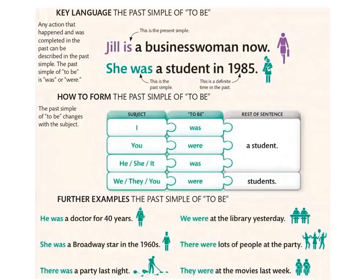Any action that happened and was completed in the past can be described in the past simple. يعني أي action اللي صارت في الماضي، happened in the past وانتهت في الماضي، نستعملوا لها past simple tense. Okay.